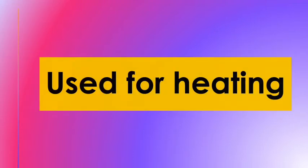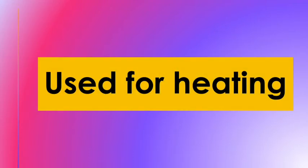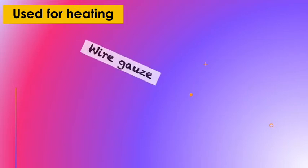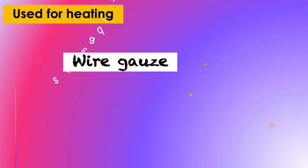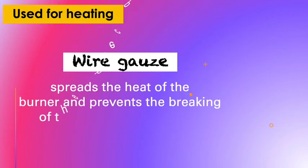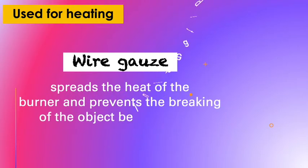Let's start with use for heating. The first one is wire gauze. A wire gauze spreads the heat of the burner and prevents the breaking of the object being heated. Here's a picture of a wire gauze.